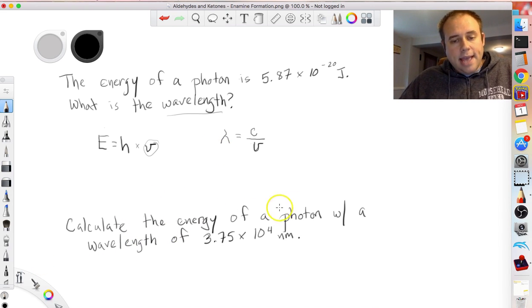And then the second one says calculate the energy of a photon with a wavelength of 3.75 times 10 to the fourth nanometers. So a couple of things to keep in mind here. Number one, we're looking for the energy of a photon. We know that energy is equal to Planck's constant, which we know, times frequency. So we don't know the frequency yet, but we can get that if we know the wavelength. So this problem is almost the reverse of the problem up here. Here I'm given an energy, I want the wavelength. Here I need to find the energy and I'm given the wavelength.